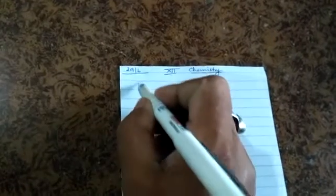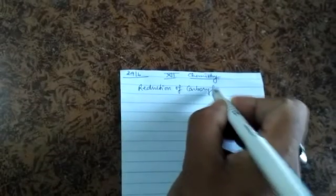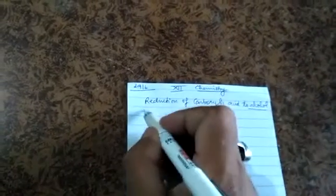Chemistry video for class 12. The remaining part of properties of carboxylic acid will be discussed today. Now the properties of carboxylic acid - reduction of carboxylic acid to alcohol in presence of...